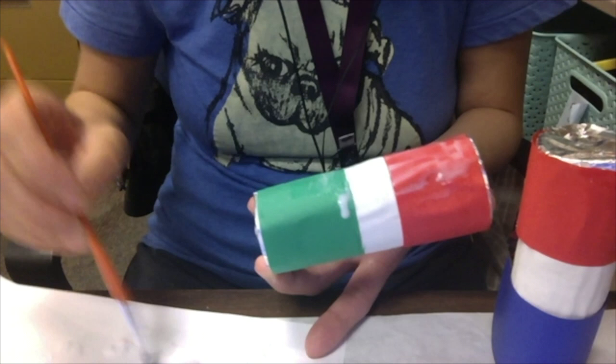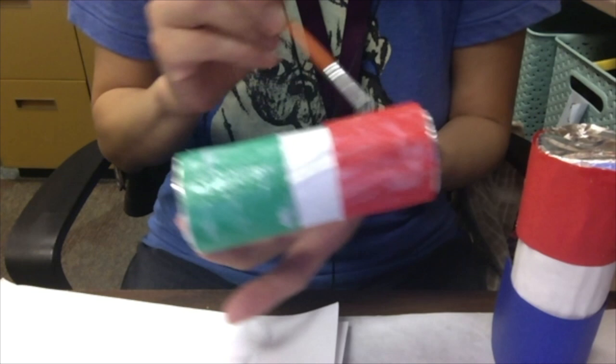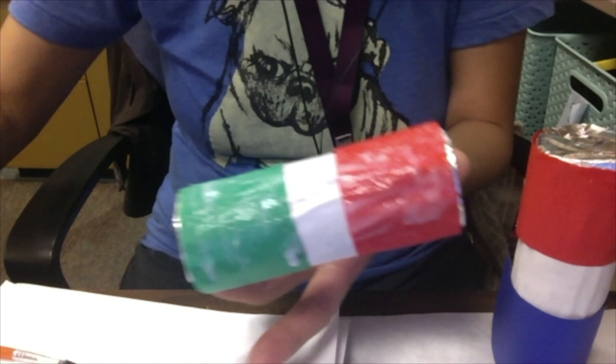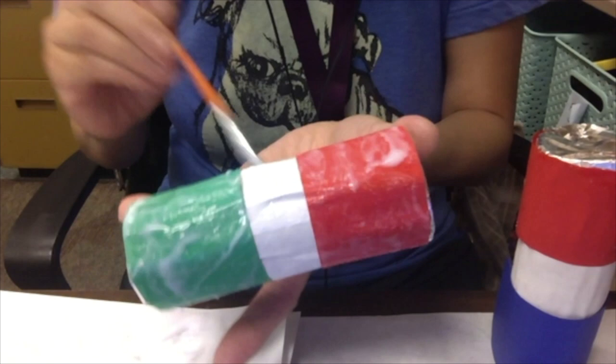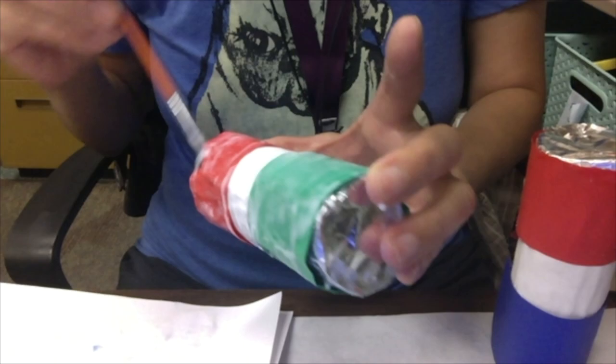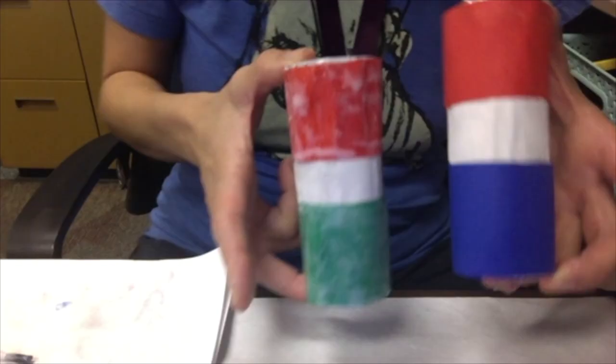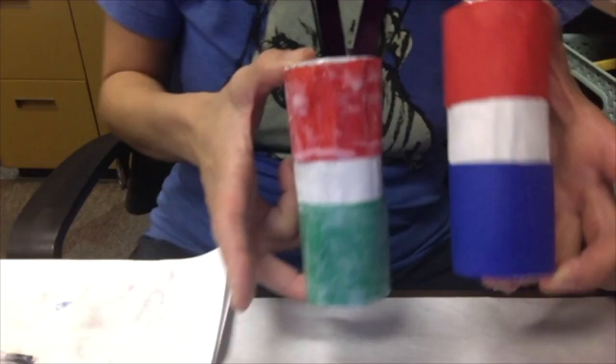Right now it looks kind of clumpy and it doesn't look that good, but once the glue dries, it'll be clear and have a little bit of a shininess to it. If you decide to paint your maraca all over with the glue, you want to set it on the end to dry and you want to give it a good amount of time to dry out.